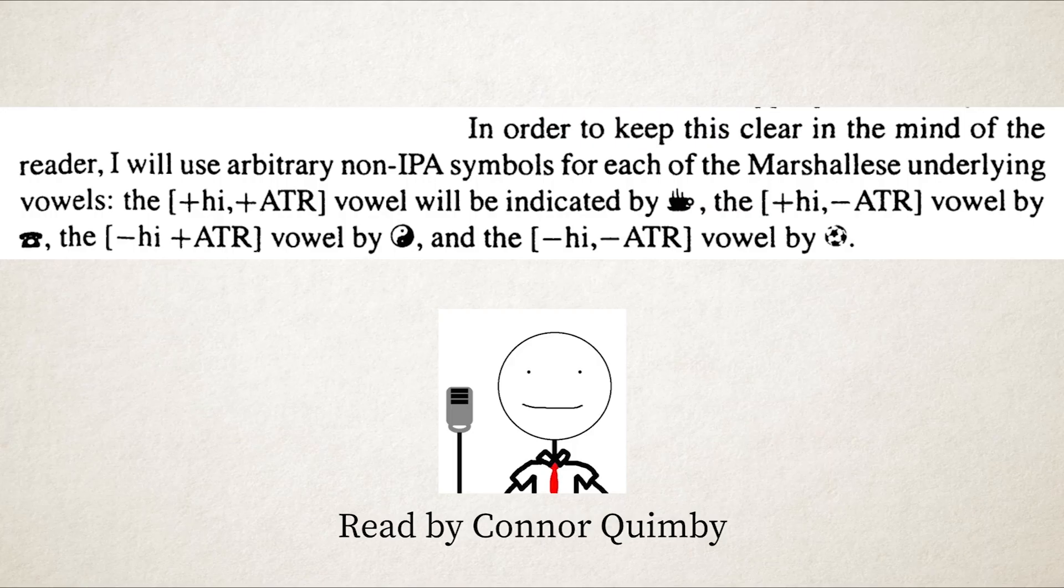In order to keep this clear in the mind of the reader, I will use arbitrary non-IPA symbols for each of the Marshallese underlying vowels. The high advanced tongue root vowel would be indicated by hot beverage, the high retracted tongue root vowel by rotary phone, the low advanced tongue root vowel by yin yang, and the low retracted tongue root vowel by soccer ball.